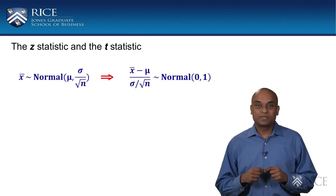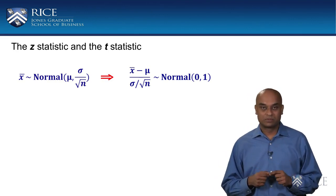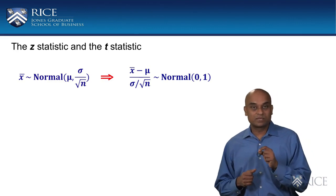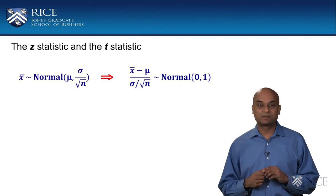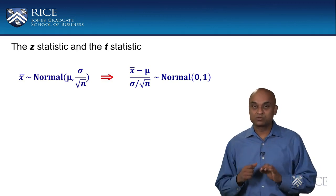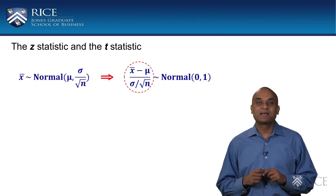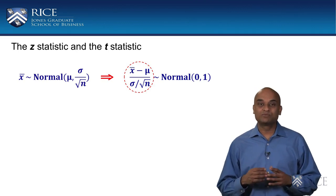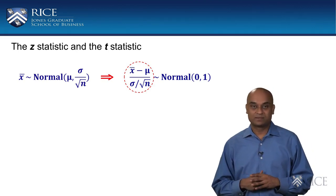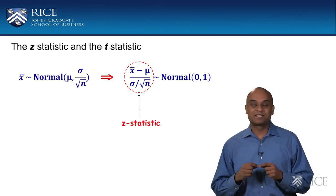Further, this expression can be mathematically rearranged as shown. Recall, this was discussed when we were studying the normal distribution and its properties in the second course of this specialization. The resulting expression, which is circled, has a standard normal distribution — that is, a normal distribution with mean equal to 0 and a standard deviation equal to 1. This expression is also known as the Z-statistic.